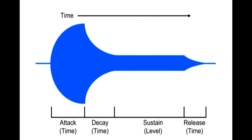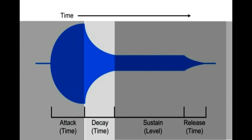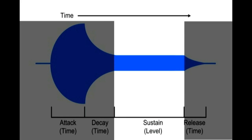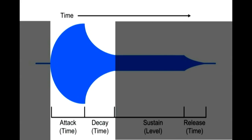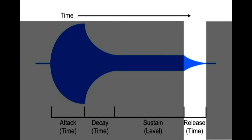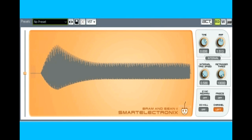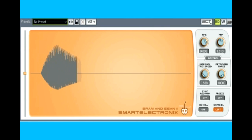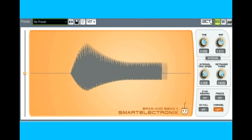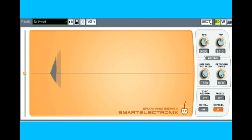The Attack time controls how long it takes for the volume to initially fade up. Once the volume has reached maximum, it then decays at a rate set by the Decay control. Rather than always decaying back to zero, it instead fades to the Sustain volume level. Only after you release the key on the keyboard does the volume go back to zero at a rate determined by the Release setting. The ADSR times are relatively slow compared to note frequencies, so the oscilloscope sweep time is also set slow so you can see how the ADSR changes the volume over several seconds.